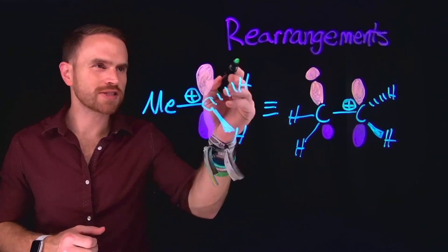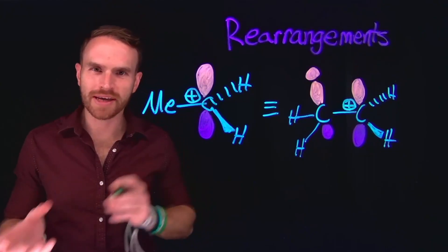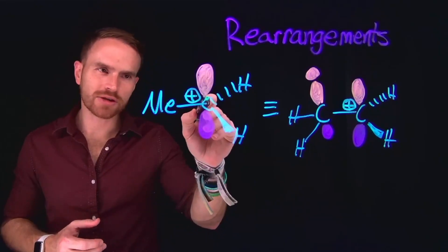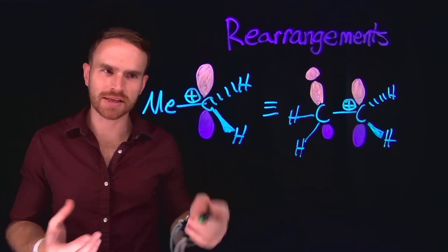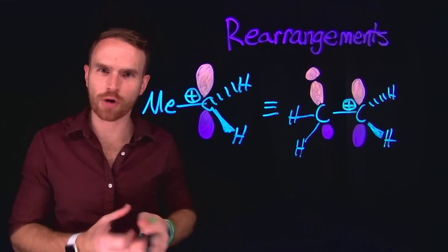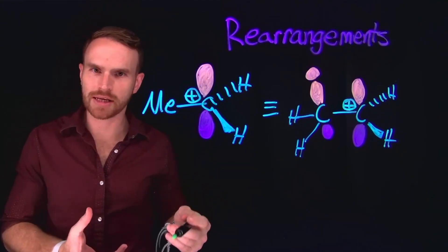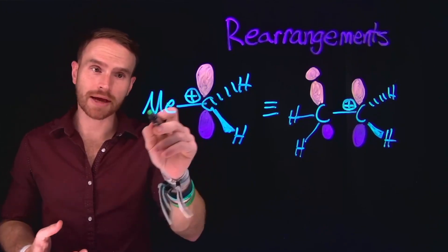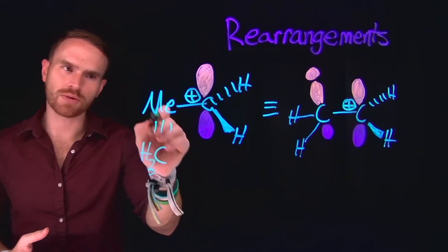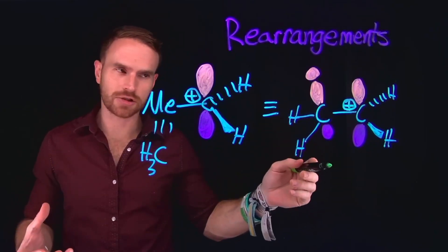The fourth and final pattern is what is known as rearrangements. To understand rearrangements, we need to think about the orbital interactions occurring anytime we have a carbocation. In a carbocation, there's an empty P orbital which doesn't have any electrons in it, which is the reason it is positively charged — there's a deficiency of electrons at that carbon position. These can occur regularly when adjacent to electron-donating groups, such as an alkyl group like a methyl group, which is the same thing as CH3.